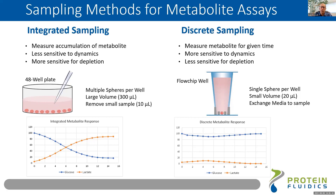For our system, because our fluid exchanges a complete volume — we're doing a one-for-one exchange of conditioned media with fresh media — you get what we call a discrete metabolite response. If you're looking at glucose, you're taking a smaller amount of glucose out, so you see a smaller decrease.